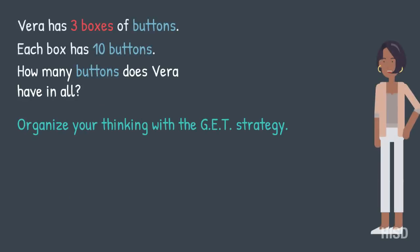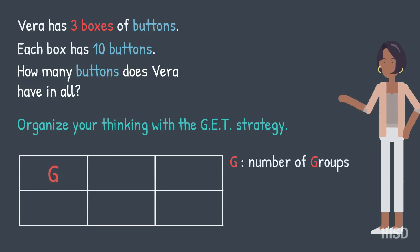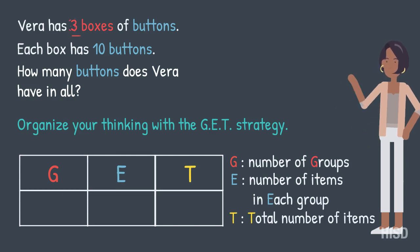You can organize your thinking with the GET strategy. G represents the number of groups. E represents the number of items in each group. And T represents the total number of items. So in the story, there were three boxes, or groups. There were ten buttons in each box. And the total number of buttons is what we are trying to figure out.